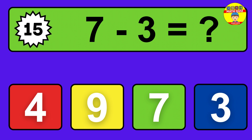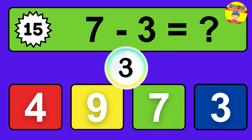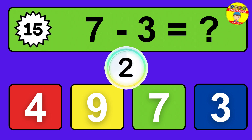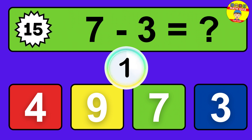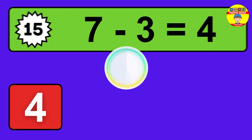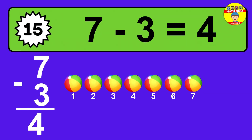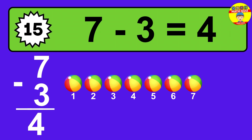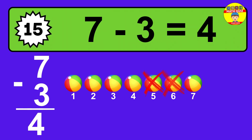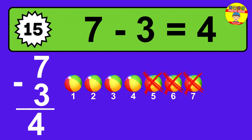Question fifteen: seven minus three equals what? The answer is seven minus three is four. Let's count it. One, two, three, four.